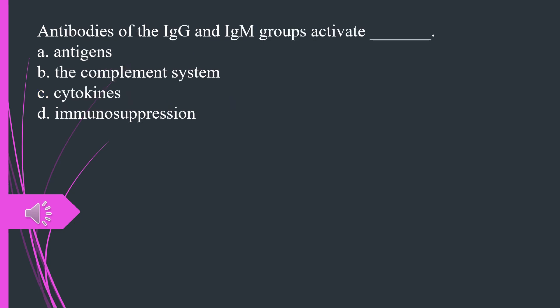Antibodies of the IgG and IgM groups activate A. Antigens B. The complement system C. Cytokines D. Immunosuppression. The answer is B, the complement system.